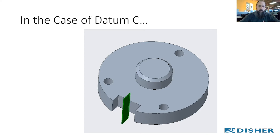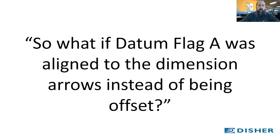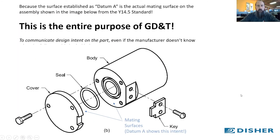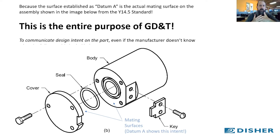What if datum A were aligned with the dimension arrows instead of being offset? As shown in the drawing on the left, if the flag is in line with the 12.7 dimension with no offset, that actually means datum A becomes the center plane that bisects the thickness of that cap — instead of just the mating surface. Elsewhere in the GD&T standard they show an application for this cap and how it mates against the body, so we really want that inner surface to be our datum, not the center of the thickness.